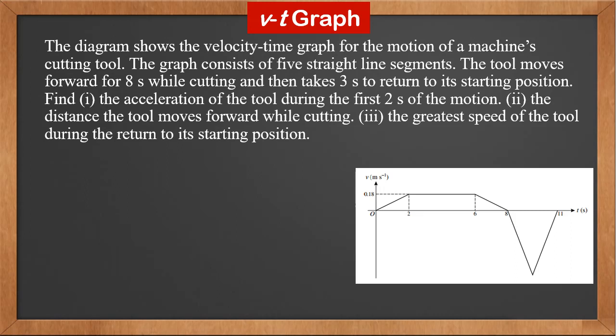The diagram shows the velocity-time graph for the motion of a machine's cutting tool. The graph consists of 5 straight line segments. The tool moves forward for 8 seconds while cutting and then takes 3 seconds to return to its starting position. Find: first, the acceleration of the tool during the first 2 seconds; second, the distance the tool moves forward while cutting; third, the greatest speed of the tool during the return to its starting position.